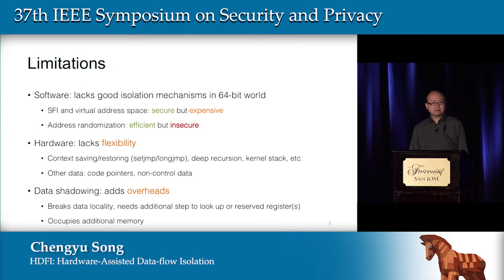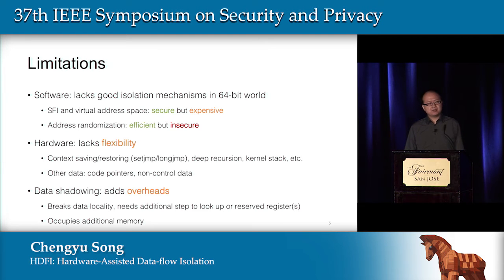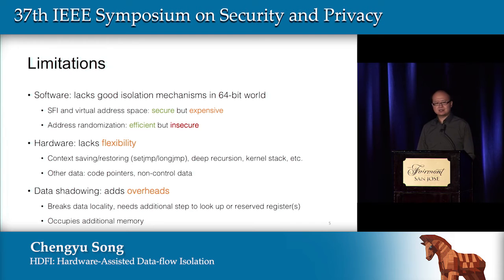For hardware-based shadow stacks, the problem is flexibility. Existing or proposed hardware-based shadow stacks have problems supporting features like set jump, long jump, deep recursion, and sometimes kernel stacks. And because they are specialized to protect only the return address, it is very hard to reuse them to protect other types of data, such as other code pointers or non-control data. In addition, data shadowing itself adds additional overhead — it breaks data locality, requires additional steps to look up shadow data, or requires reserved registers, and there is unavoidable memory overhead.